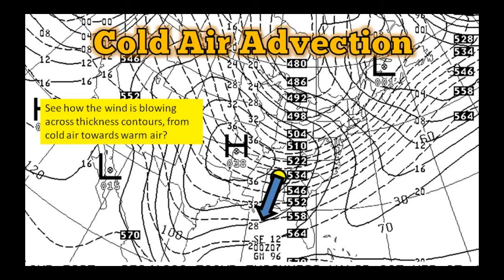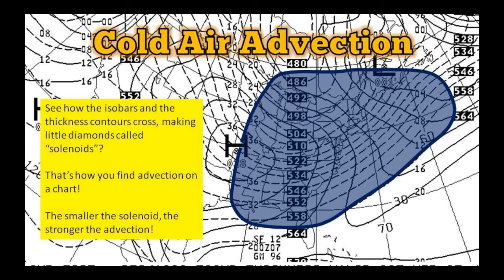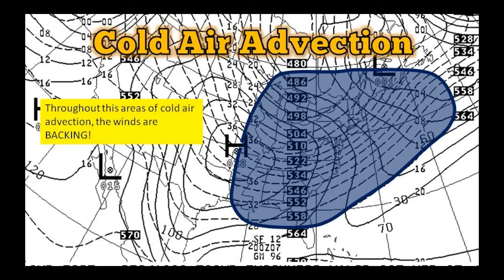The wind at the surface is blowing parallel to pressure contours and across contours of thickness from cold toward warm air. Anytime you have a wind blowing across two sets of contours like that, you form little diamonds called solenoids. Smaller solenoids mean stronger advection. This area where the two sets of contours cross and create solenoids is an area of cold air advection, and throughout that area the winds are backing.